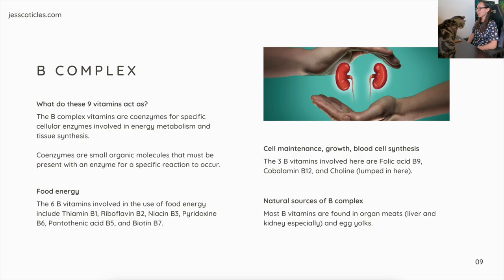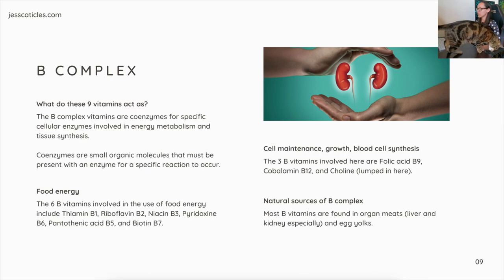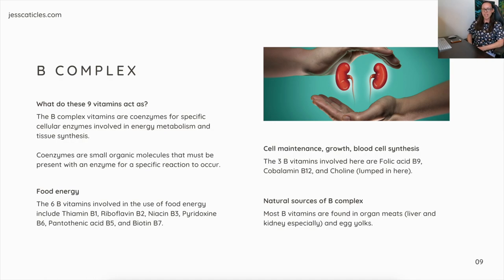Cell maintenance, growth, and blood synthesis: the three B vitamins involved are folic acid B9, cobalamin B12, and choline, which is also lumped into this category. Natural sources of B-complex vitamins: most B vitamins are found in organ meats — liver and kidney especially — and in egg yolks.